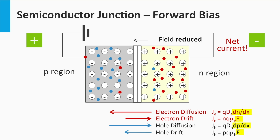Note that the effect of the increased flux due to diffusion is much larger than the small changes in drift. This means that we generate a net current over the depletion zone. More electrons are diffusing from the n-region to the p-region than are drifting from the p-region to the n-region. More holes are diffusing from the p-region to the n-region than are drifting from the n-region to the p-region.